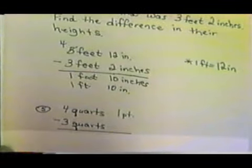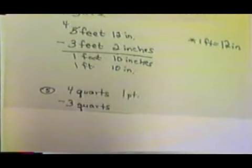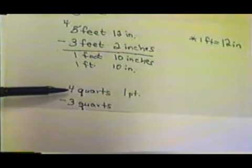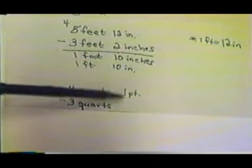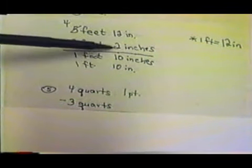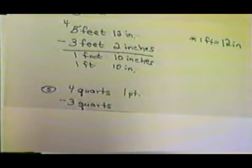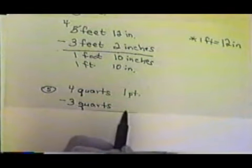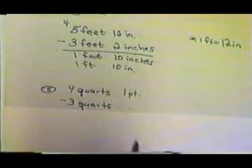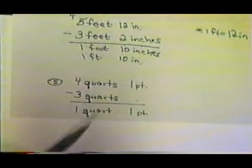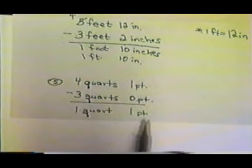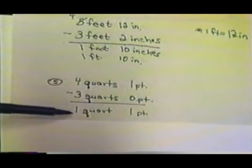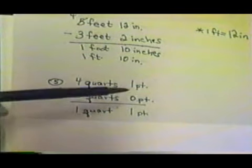Let's look at another one. Let's take 4 quarts and 1 pint, and from that subtract 3 quarts. This time our 1 pint is on top. When we get ready to subtract, we don't have any pints on the bottom — but can we take 0 from 1? We can. 0 pint from 1 pint leaves 1 pint, and 3 quarts from 4 quarts leaves us with 1 quart. So we didn't have to do any borrowing in that problem because the 1 pint was on top.